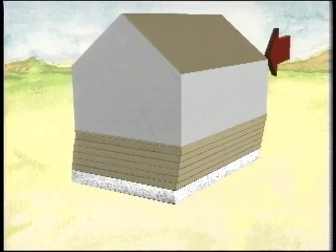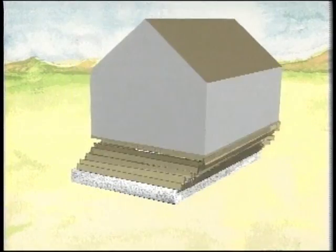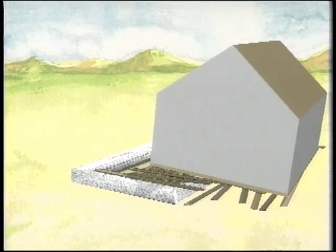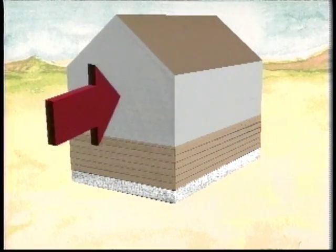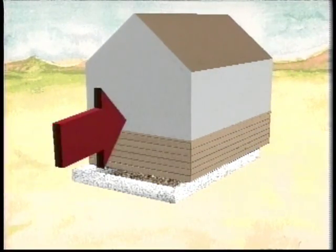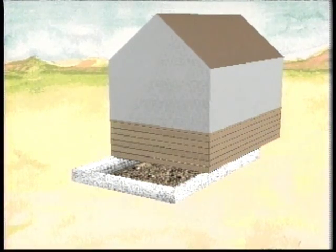Now simply adding anchor bolts isn't enough. The bolts will hold the bottom of the wall in place, but the top will still shift if the wall isn't strengthened. But even after you strengthen the walls, you still have to add anchor bolts so the stronger walls won't slide. Now these walls were strong enough, but the house still slid off the foundation.